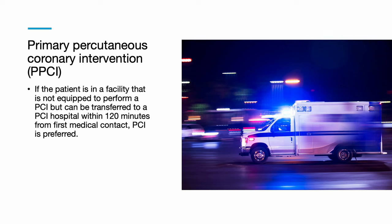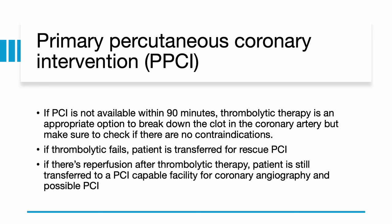If the patient is in a facility not equipped to perform a PCI but can be transferred to a PCI hospital within 120 minutes from first medical contact, PCI is still preferred. If PCI is not available within 90 minutes, thrombolytic therapy is an appropriate option to break down the clot in the coronary artery, but make sure to check for any contraindications. If thrombolytic therapy fails, the patient is transferred to a PCI-equipped hospital for rescue PCI.